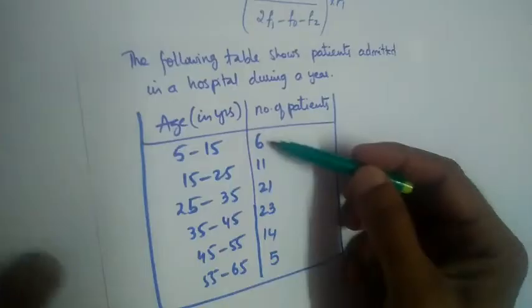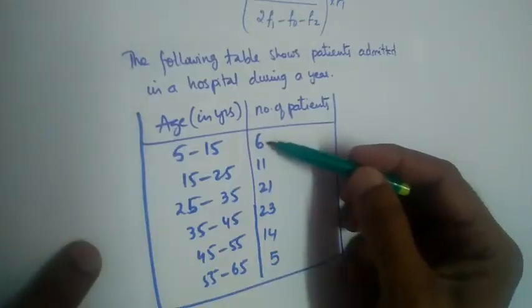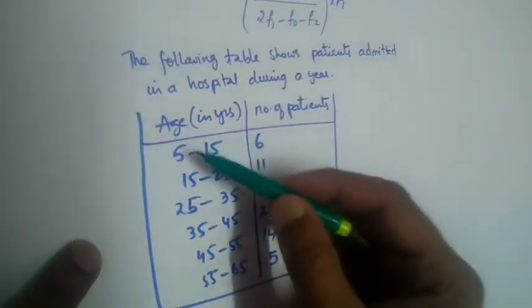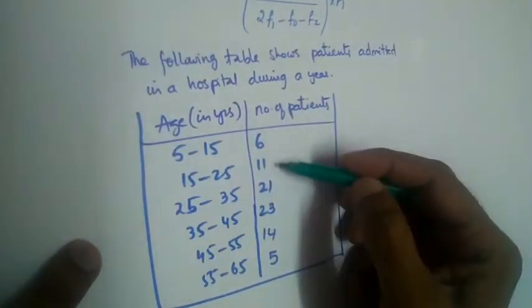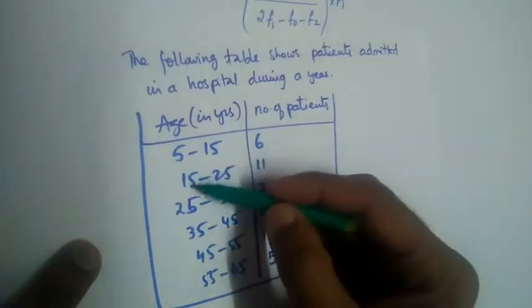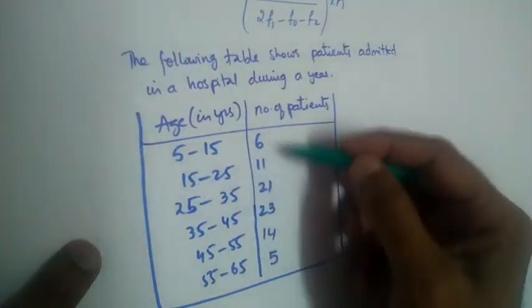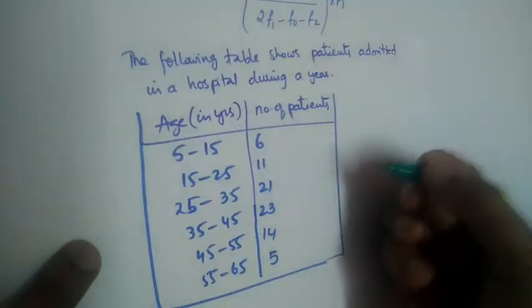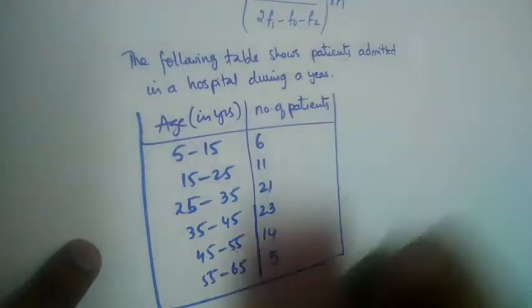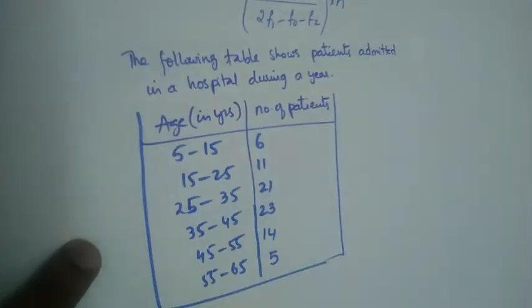6 patients are aged between 5 to 15, 11 are aged between 15 to 25, and so on. We need to find the mode of this grouped data.